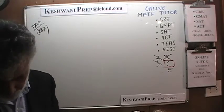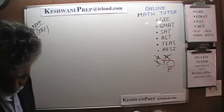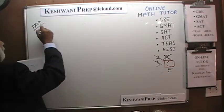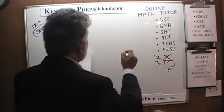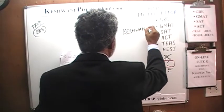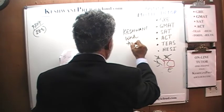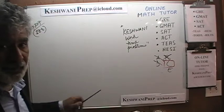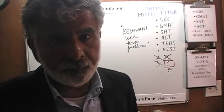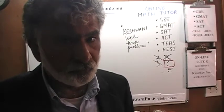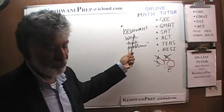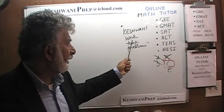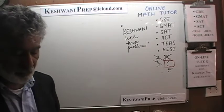The last problem in the first column on page 207 is number 288. If you are not good at work-time problems, you can search for more practice by typing my name — Keswani — and the concept name. Just type 'Keswani work time problems' and you will find a whole bunch of problems I have done in the past.